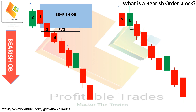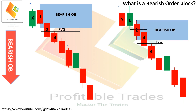If this scenario appears, we will shift our order block to the next candle in order to meet the requirement of a fair value gap. In this case, we take candle two, candle three, and candle four — there you see a fair value gap between candle two and four. In this way, we mark our order block from candle two instead of candle one, because we couldn't see a gap between candle one and candle three.